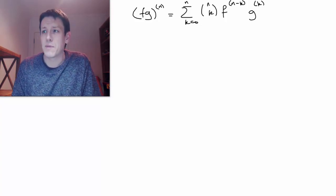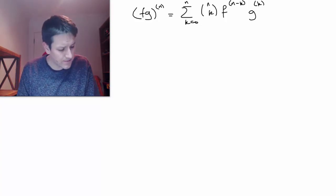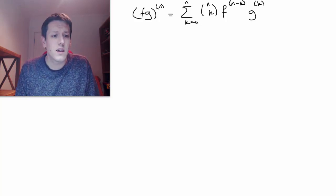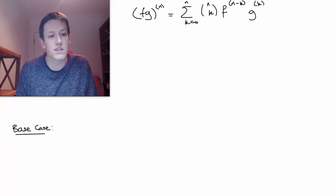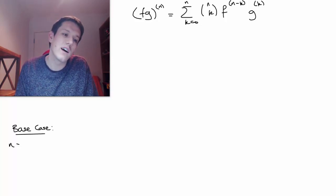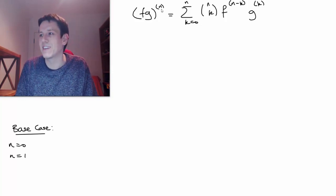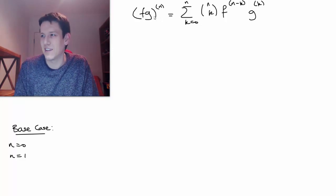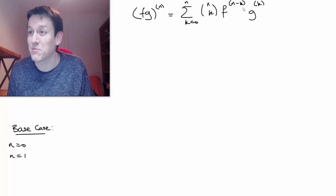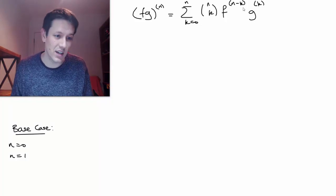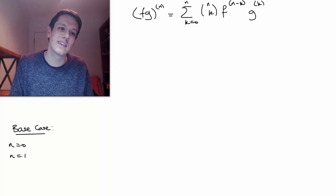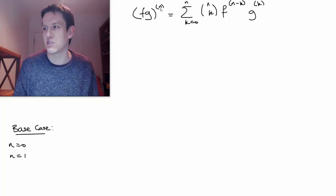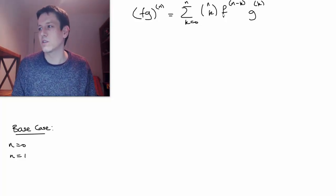Now I'm going to prove it by induction and I'm going to assume that you know what that means. And the base case here is pretty trivial, as they usually are, but we do need to check it. You can take either n equals 0 if you want to be really cheeky and just say, okay, actually all this says for n equals 0 is that f times g is equal to f times g when I haven't differentiated it. And that would be fine.